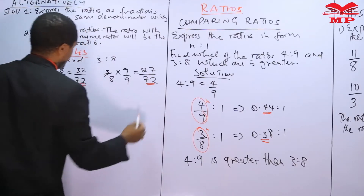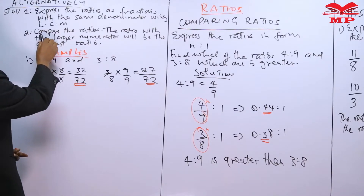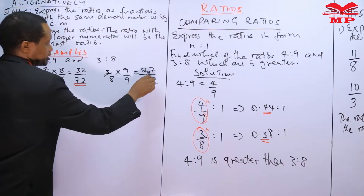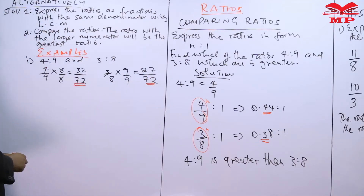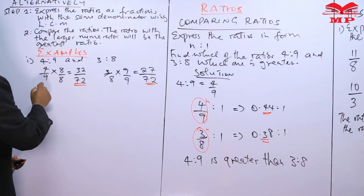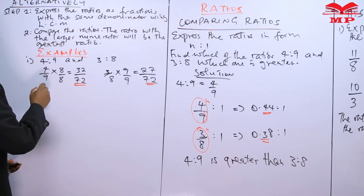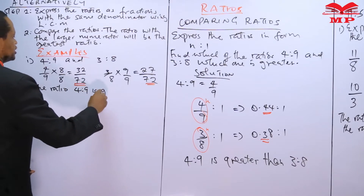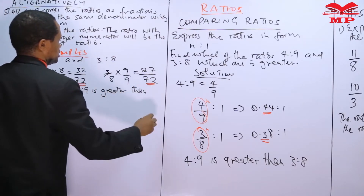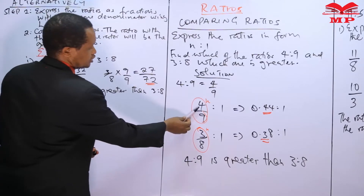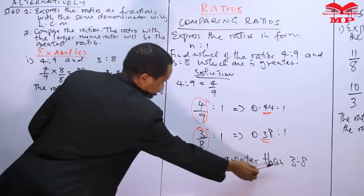Moving to the second step, we compare the numerators. Between thirty-two and twenty-seven, thirty-two is greater. Therefore the ratio four to nine is greater than the ratio three to eight — the same result as before.